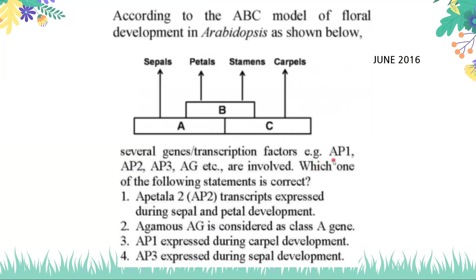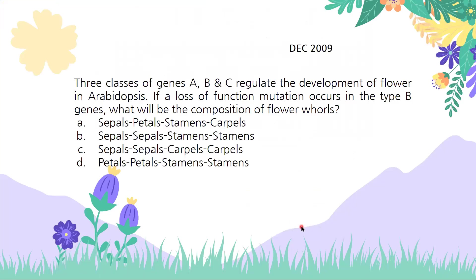According to the ABC model of development in Arabidopsis, AP1, AP2, and AP3 are involved. Which of the following statements are correct? Apetala2 is expressed during sepal and petal development — class A includes Apetala1 and Apetala2, so yes, this is a correct statement. Agamous is considered a class A gene — absolutely incorrect, Agamous is a class C gene. AP1 is expressed during carpel development — incorrect. AP3 is expressed in sepals — no, it's AP1 and AP2 that cover sepals. So option A is the correct answer.